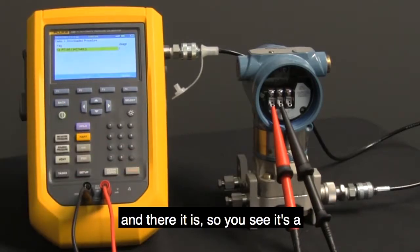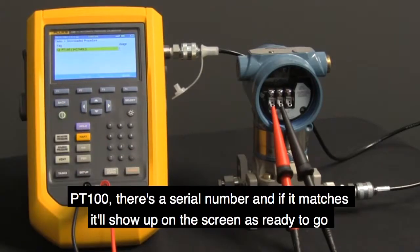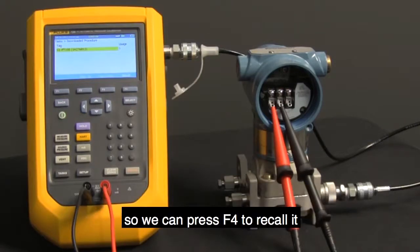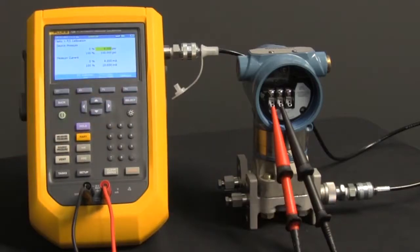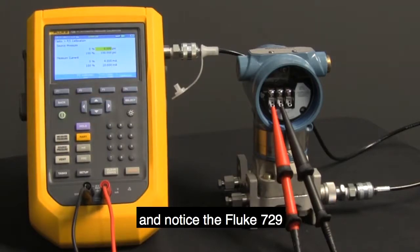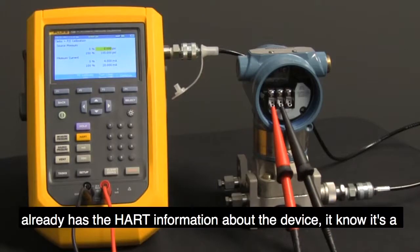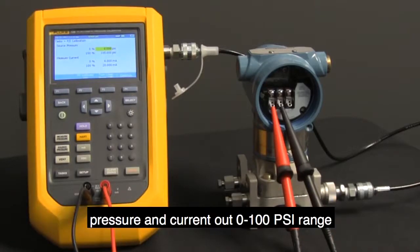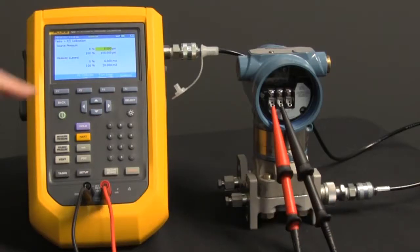So you see it's a PT100. There's a serial number, and if it matches up it'll show up on the screen, ready to go. So we can press F4 to recall it. And notice the Fluke 729 already has the HART information about the device. It knows it's a pressure in current out, zero to 100 psi range. Press continue.